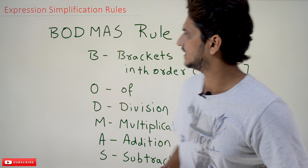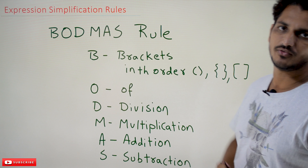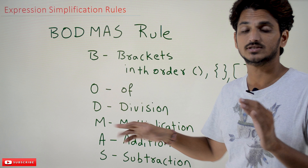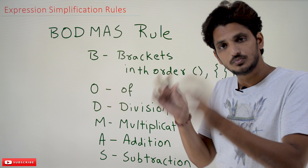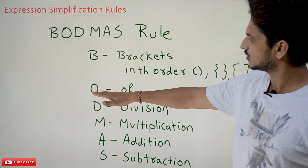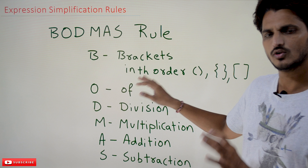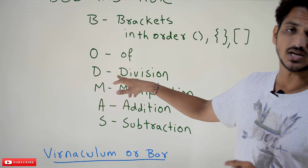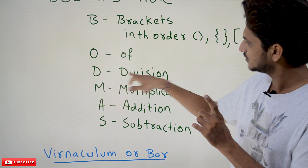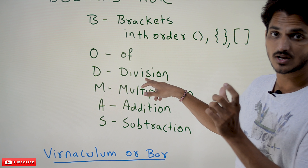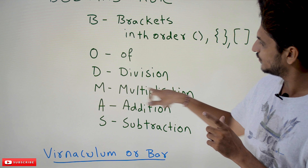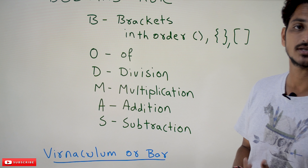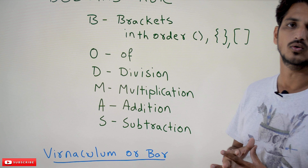BODMAS rules should be followed. BODMAS means: B means brackets should be evaluated first — the expression present in the brackets should be evaluated first. After that we go with O, meaning 'of', which we will understand in the next class with examples. After that we go with division, then multiplication, then addition, and finally subtraction. These are the rules we have to follow.